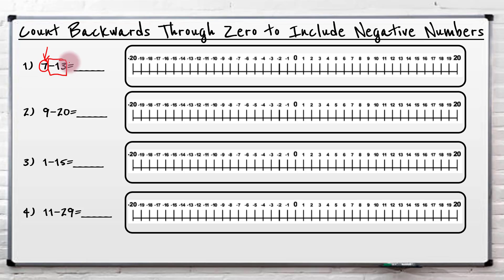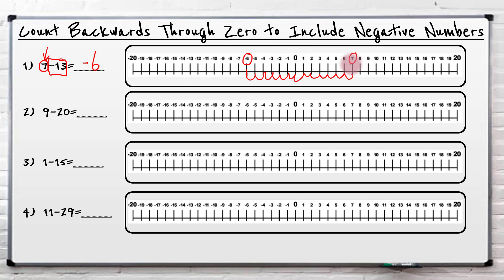So let's find seven on our number line — there's seven — and we're going to go back or take away thirteen. So we go back thirteen spaces: one, two, three, four, five, six, seven, eight, nine, ten, eleven, twelve, and thirteen would take me to minus six. So going back through zero from a positive number, we can actually go into the negatives. Seven minus thirteen is minus six, or negative six.